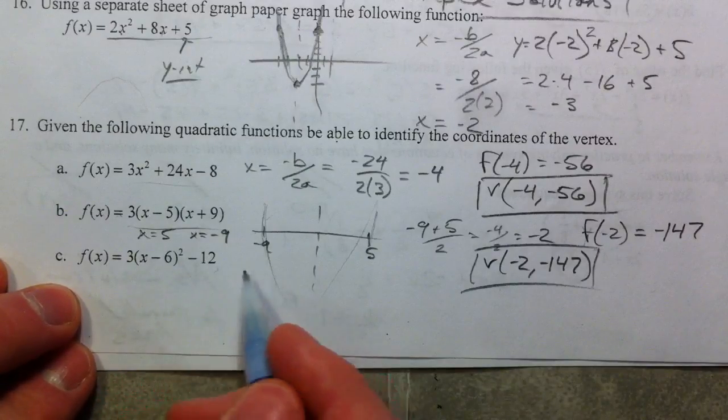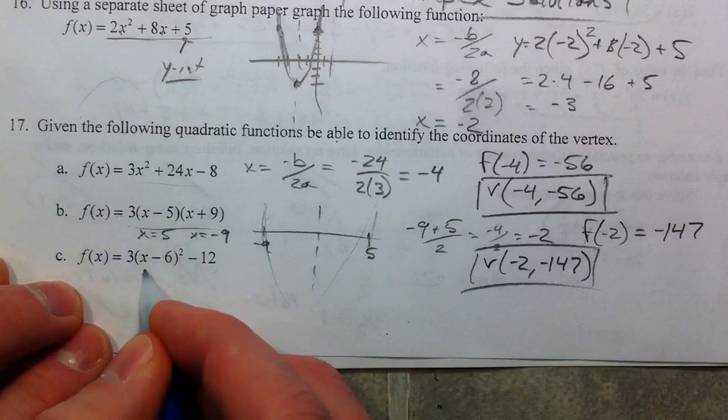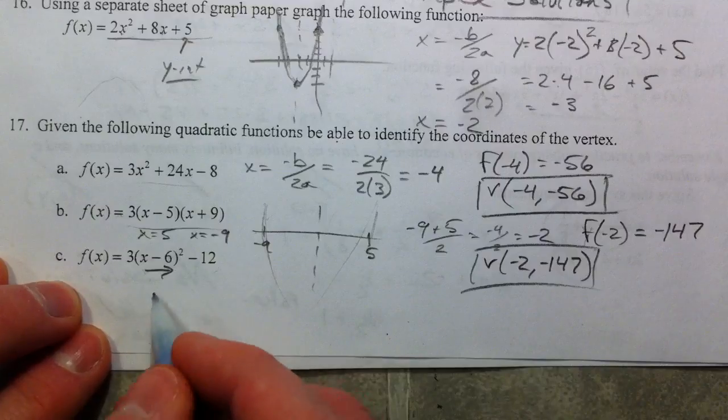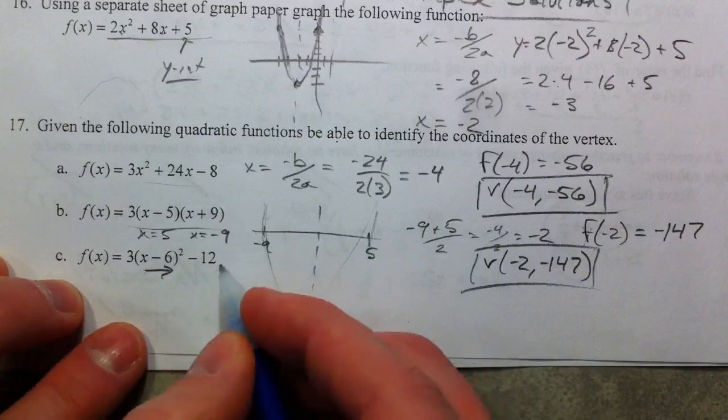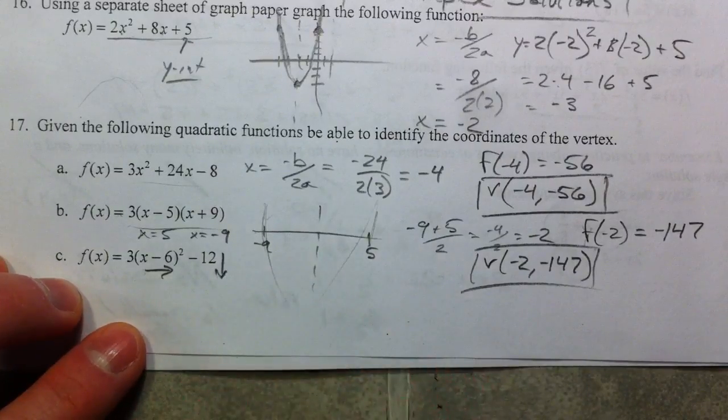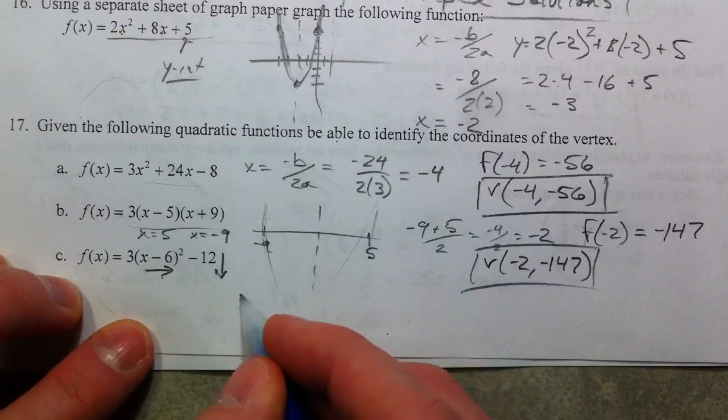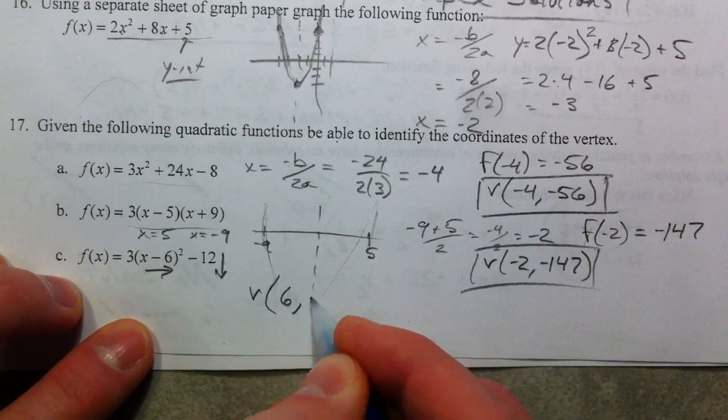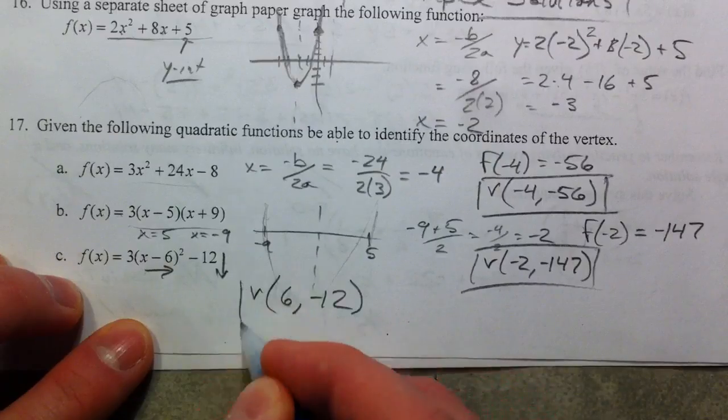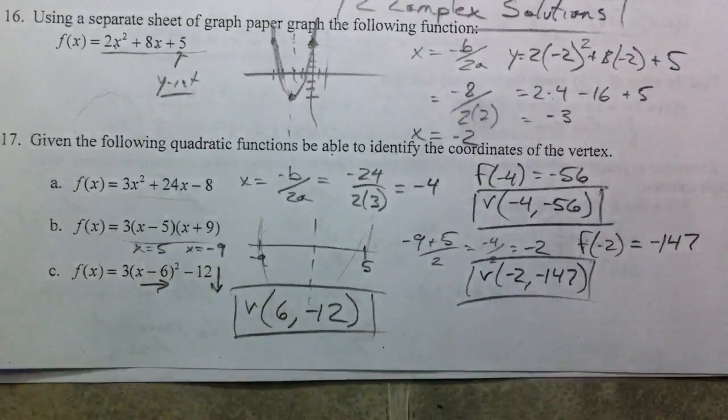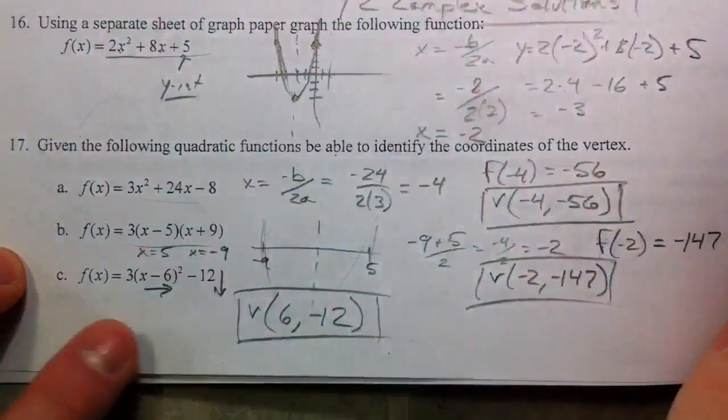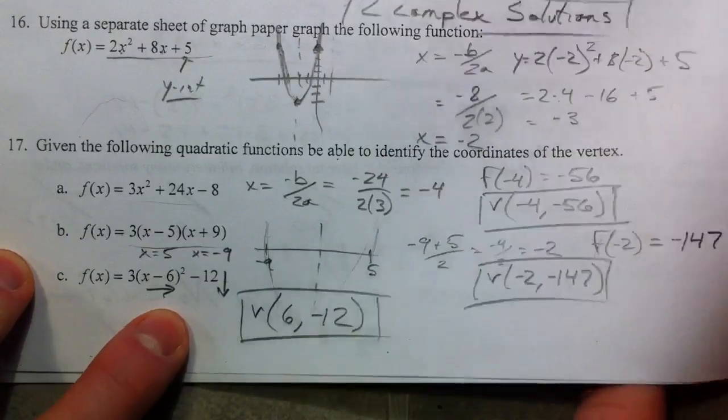This is in vertex form. This is the question you want because you know the minus 6 makes it shift to the right, sort of opposite of what you think. And the minus 12 shifts it down until you know your vertex is positive 6, negative 12. Again, you can plug it into your calculator and see it.